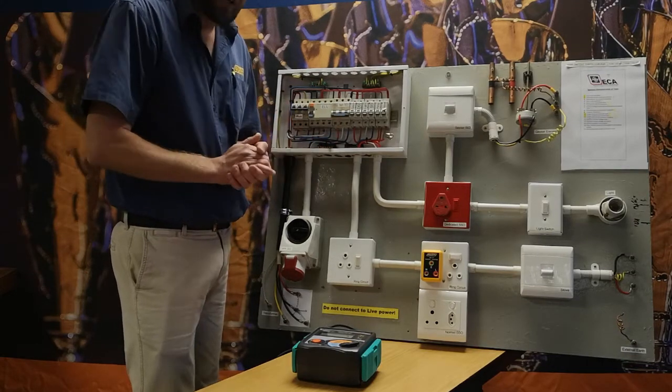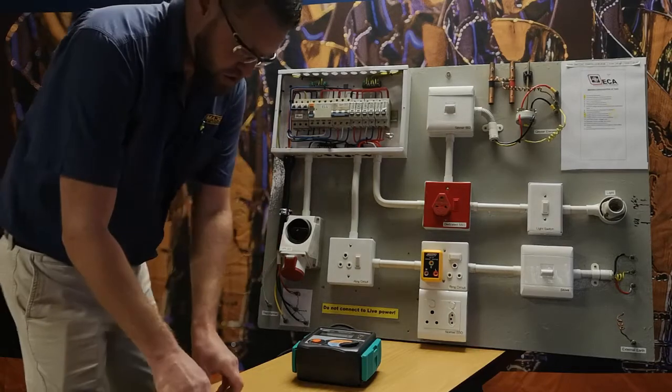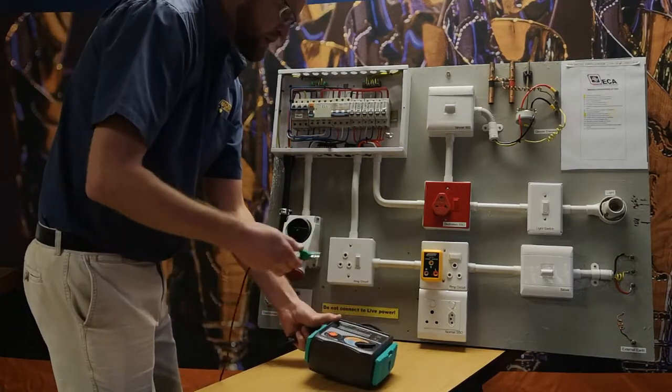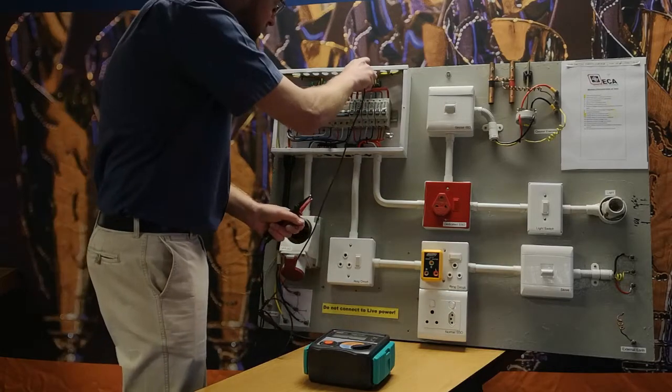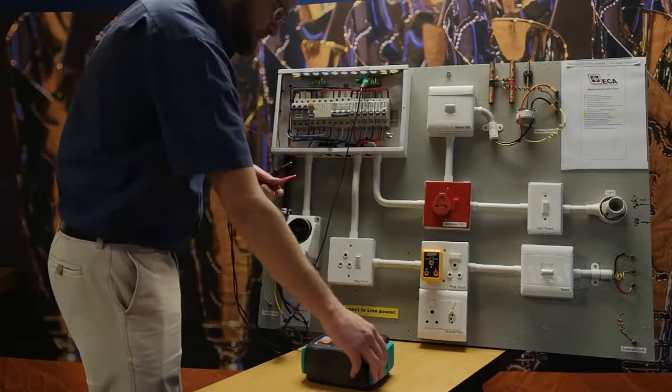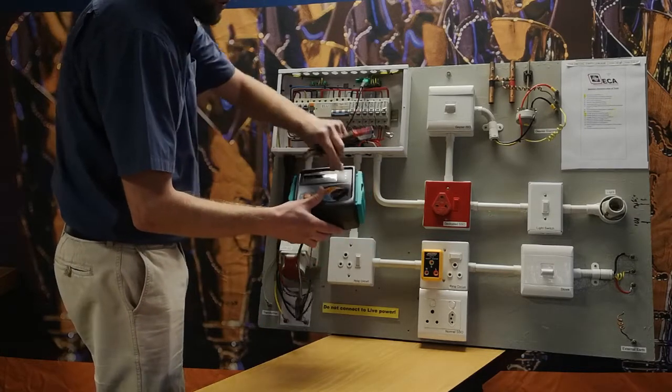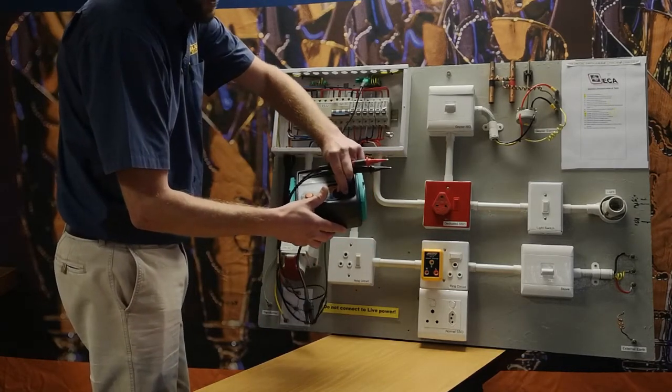So we can go ahead and start the testing. Here's your meter. Connect your earth to your earth before you start to loop. Switch your meter to 20 ohms or 200 ohms, but you normally start at the bottom and work your way up.